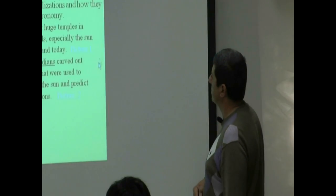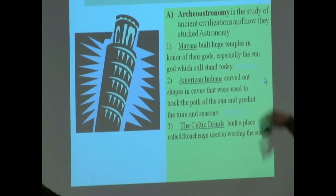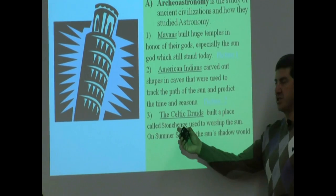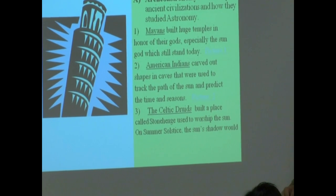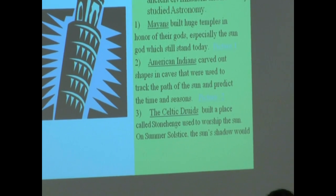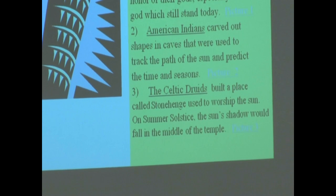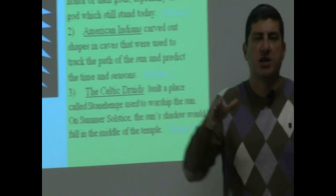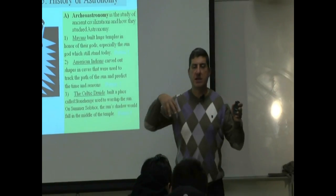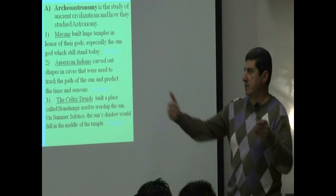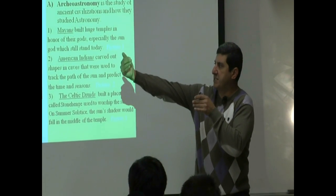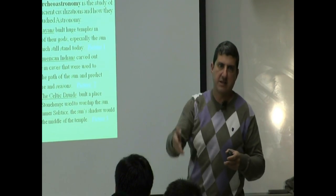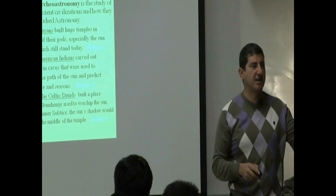The Celtic Druids built a place called Stonehenge. This is one of the most famous ones, used to worship the sun. On summer solstice, the sun's shadow would fall in the middle of the temple. Basically, the way that they oriented this, it's a set of stones, and it was also a place of worshiping the sun. On the summer solstice, the sun would rise in such a way that its direct rays would go through the middle of the temple. And then that was their way of knowing that it's the longest day of the year.